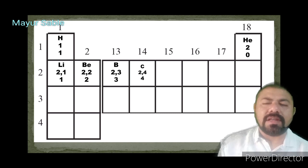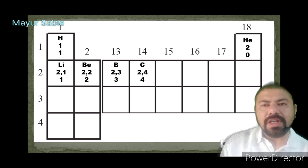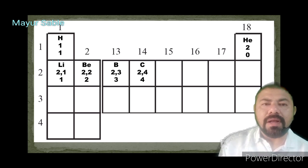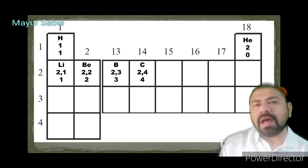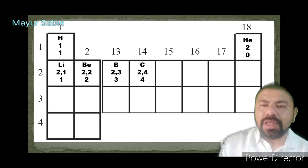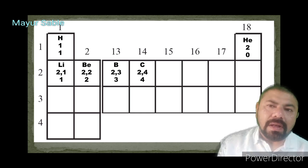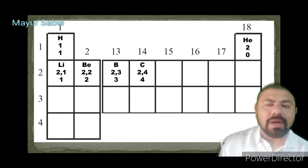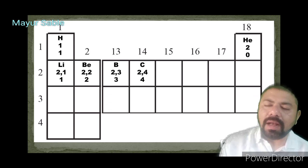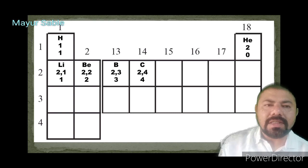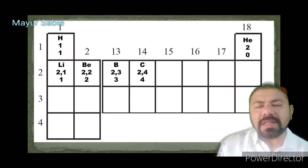Carbon has atomic number 6, electronic configuration 2,4. The nearest inert gas elements are helium (atomic number 2) and neon (atomic number 10). Carbon can donate 4 electrons or gain 4 electrons to acquire a stable electronic configuration, forming carbocations or carboanions. Therefore the valency of carbon is 4.